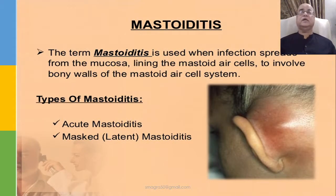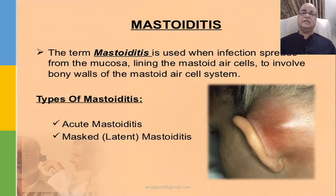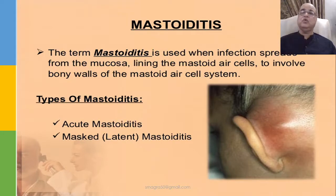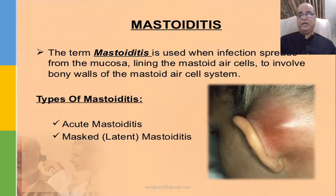One of the extracranial complications is what we call mastoiditis. This term mastoiditis is used when infection spreads from the mucosa lining the mastoid air cells to involve the bony walls of the mastoid air cell system. The mastoid air cell system is a part of the middle ear cleft. Until and unless infection is confined to the mucoperiosteal lining of the middle ear cleft, that is otitis media. But once this infection goes beyond the mucoperiosteal lining and involves the underlying bone, then it is a complicated otitis media — mastoiditis.